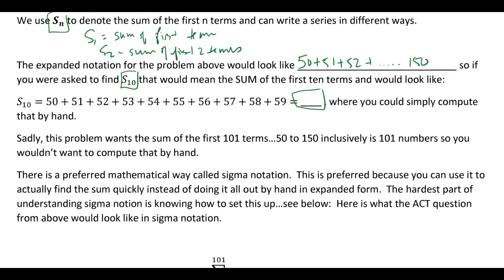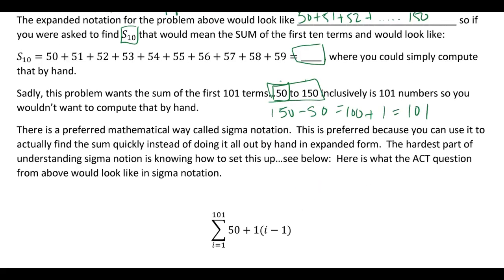So on this problem, back to this problem, they want the sum of the first 101 terms. And the reason it's 101 terms is because you have to include the 50 and the 150. So if you're ever trying to count how many numbers there are between, a common mistake is a lot of people just subtract these. But you need to remember to add the first number back on that hasn't been counted yet. So basically take the difference and then add one back. So if we're going to do this problem, we don't want to have to add it all together by hand. So we're going to talk about how there's a formula to do it. But before we use this formula, let's talk about sigma notation.